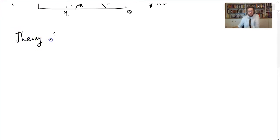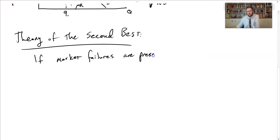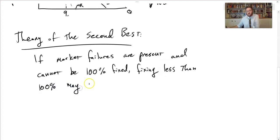The theory of the second best says that if market failures are present and cannot be 100% fixed, fixing less than 100% may make things worse. They say two wrongs don't make a right in economics. Different market failures can offset each other, kind of cancel each other out. And so if you get rid of one without getting rid of the other, you can end up worse than where you started.